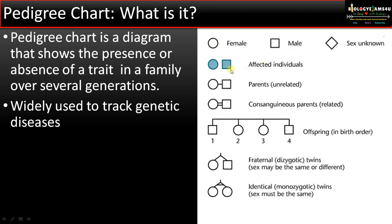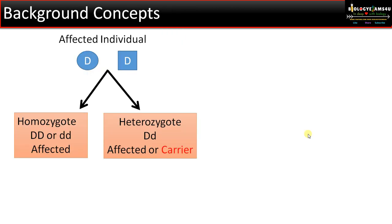Let's begin with some important symbols to understand pedigree charts. The circle represents female, the square represents male. If it is filled, that indicates affected individuals. A horizontal line between male and female indicates unrelated parents. Two horizontal lines indicate related or consanguineous parents. Offspring are represented from eldest to youngest.